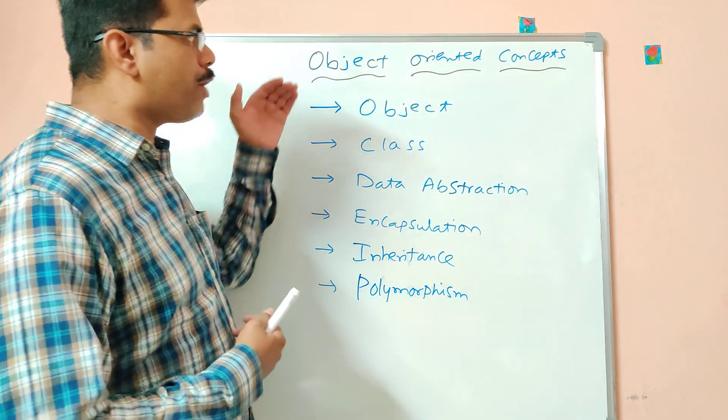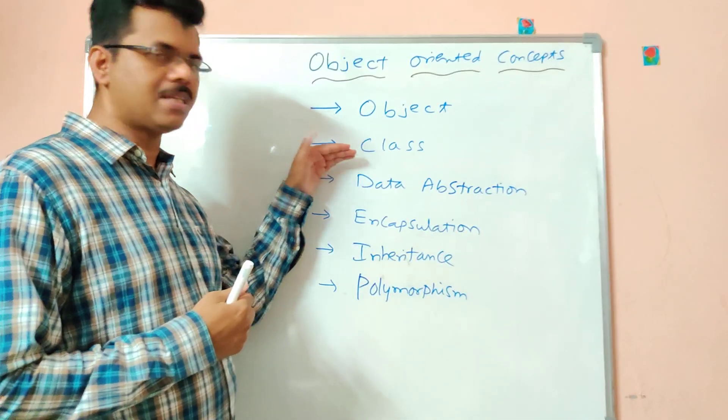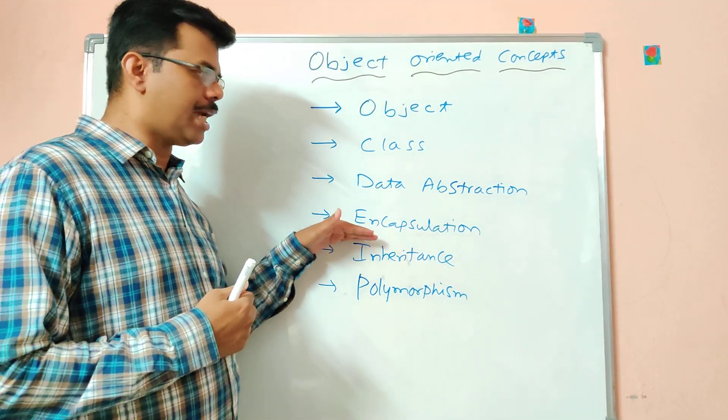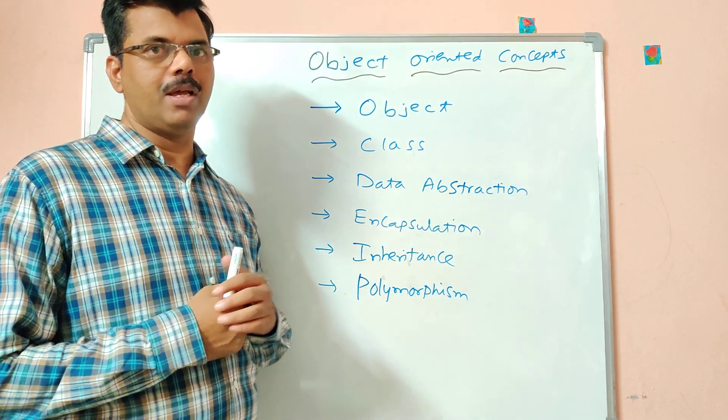So we are having six important object oriented concepts. They are object, class, data abstraction, encapsulation, inheritance and polymorphism. And in this video, we are going to see the object oriented feature.